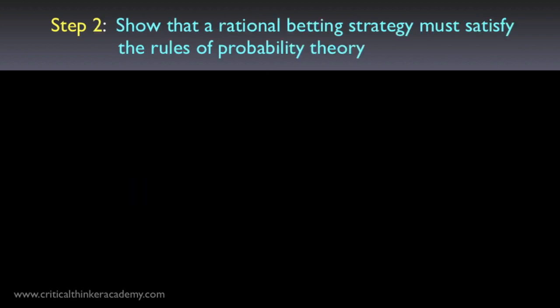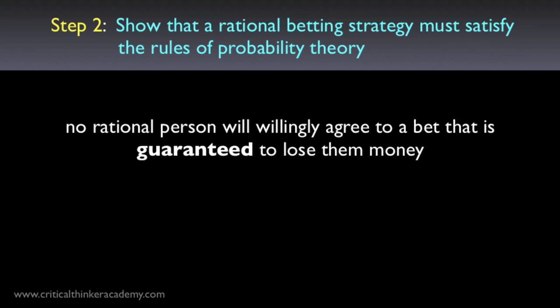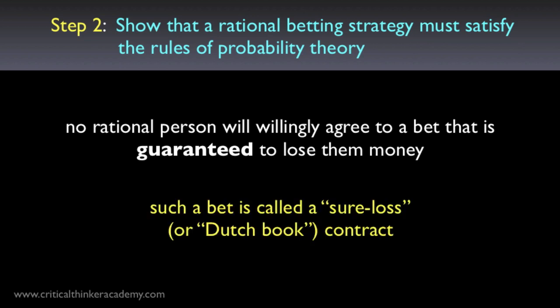Let's move on to step two. We now have a way of representing our personal degrees of belief by betting rates on imaginary gambles — this gives us an operational procedure for assigning a real number to a degree of belief. But we still don't have any rules for how to reason with these degrees of belief. The next step in the subjectivist program is to show that a rational betting strategy will automatically satisfy the basic mathematical rules for reasoning with probabilities. By a rational betting strategy, we simply mean this: no rational person will willingly agree to a bet that is guaranteed to lose them money. A bet that is guaranteed to lose you money is called a sure-loss contract. If someone's personal degrees of belief are open to a sure-loss contract, then that person can become what's called a money pump — a bookmaker could exploit this knowledge to sell you betting contracts that you will accept but will never win.